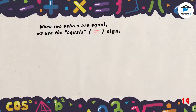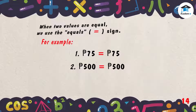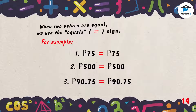When two values are equal, we use the equals sign. First example: 75 pesos on the left and 75 pesos on the right — they are both 75, so the answer is equal. Second example: both are 500, so the answer is equal. Third example: 90 pesos and 75 centavos on both sides — the answer is equal.